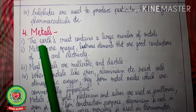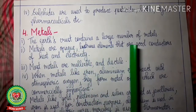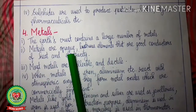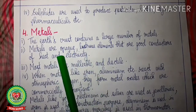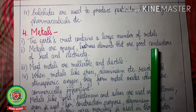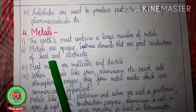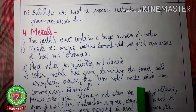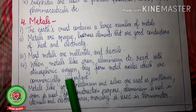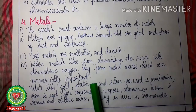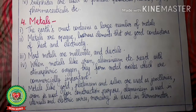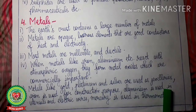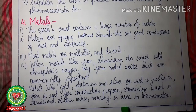Now let us discuss the last mineral group — metals. The earth's crust contains a large number of metals. Metals are opaque, lustrous elements — opaque means they do not allow light to pass through, lustrous means shiny. They are good conductors of heat and electricity. Most metals are malleable and ductile, meaning they can be melted and changed into any shape. When metals like iron and aluminium react with atmospheric oxygen, they form metal oxides which are very important commercially. Metals like gold, platinum and silver are used as jewellery. Iron is used for construction. Aluminium is used in utensils and electrical wires. Mercury is used in thermometers.